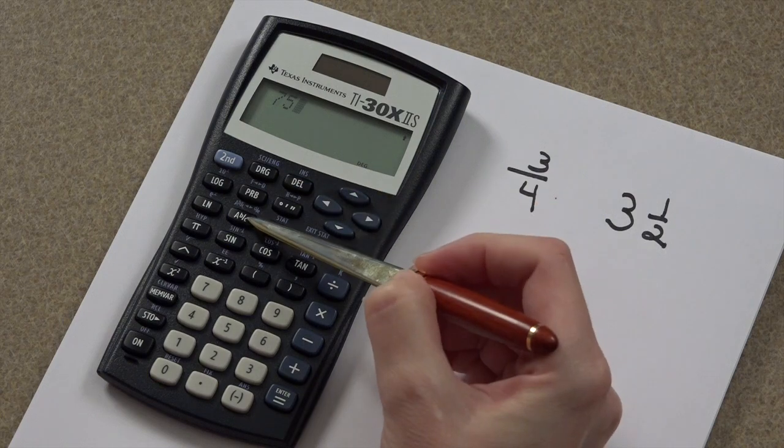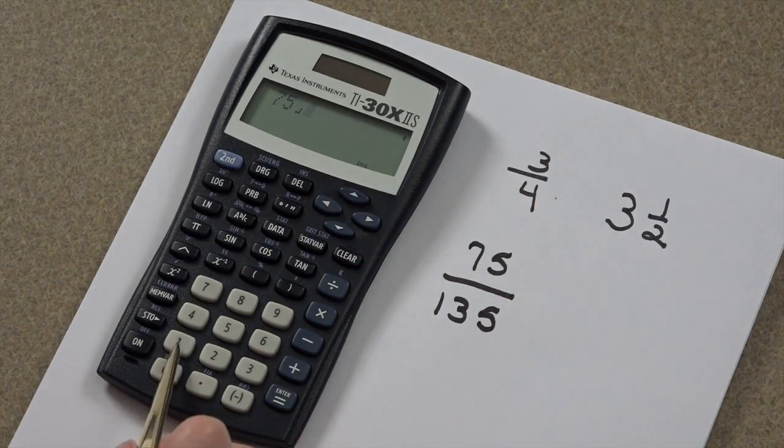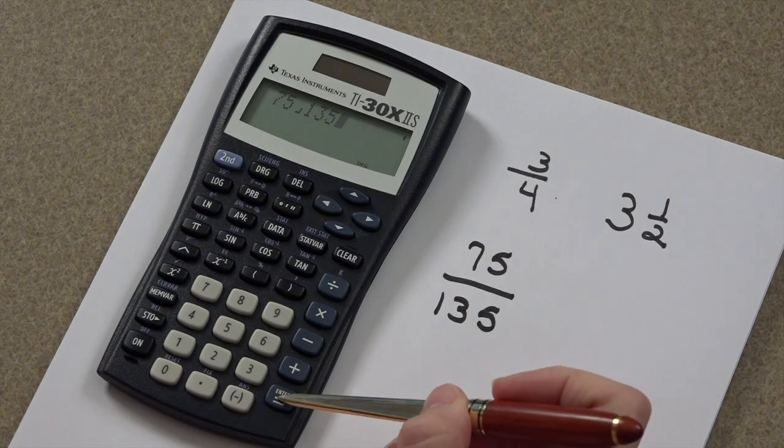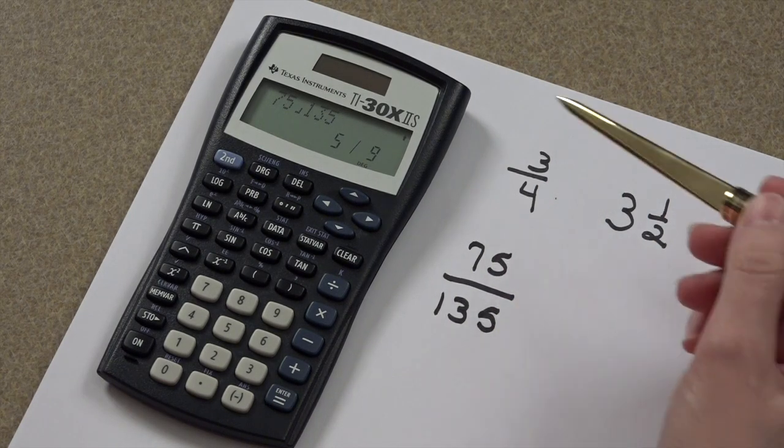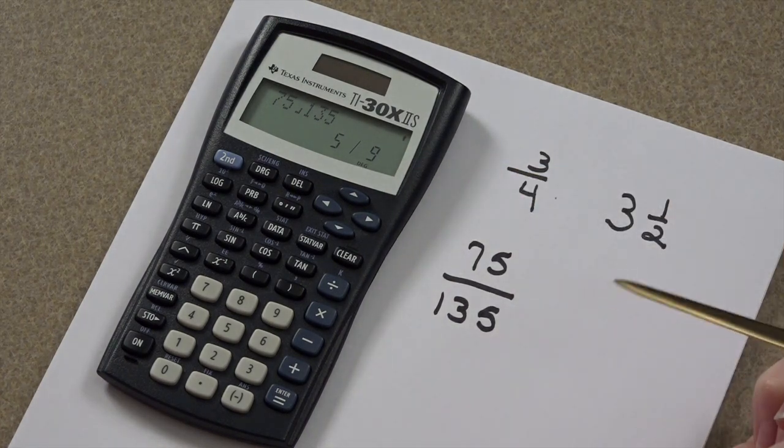75, press my fraction button. 135, and now I press enter. The reduced form of this fraction is 5 ninths. Rockin' awesome!